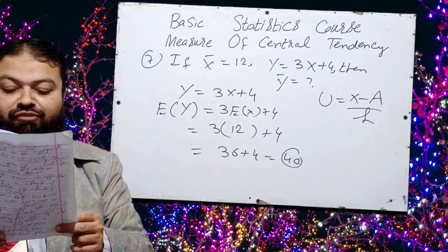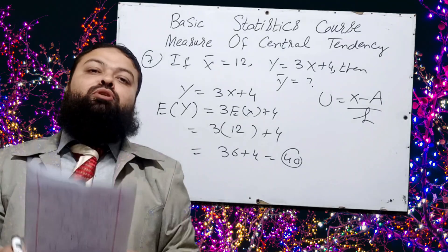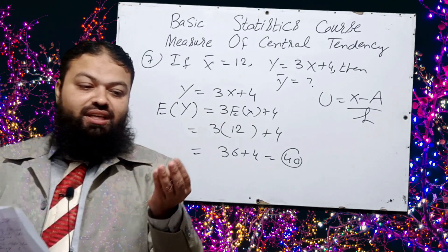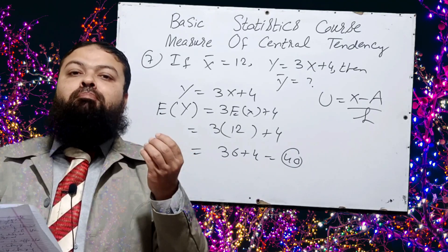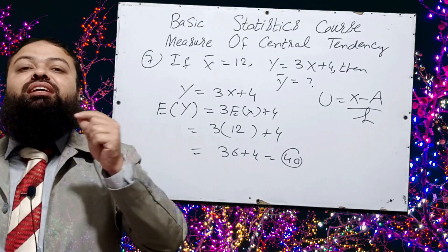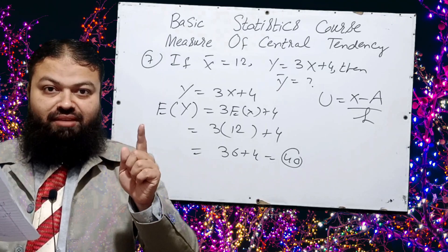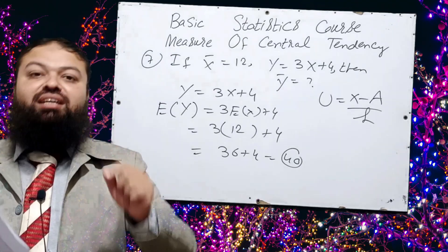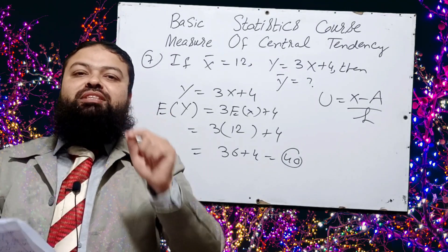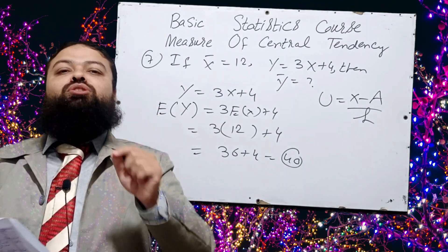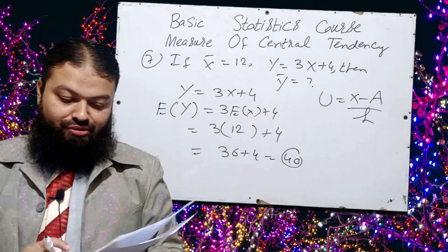Question number ten: if all values in a series are not of equal importance — for example, marks in physics, chemistry, biology, mathematics, Urdu, and Pakistan studies, where each subject is not of equal importance — in that case, we use weighted mean. When all things are not of equal importance, weighted mean is the suitable average. That is a very important one.